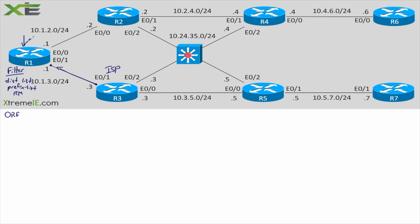The resources are going to be spent on our device, but service provider devices are usually much more powerful than ours. With ORF, we can use a prefix list and the ORF capability to actually send the service provider what we want to filter. The service provider then uses its own resources to not send us those prefixes, so we're minimizing the resources on our own device and moving them over to the service provider. We control the filtering.